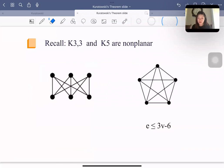Recall that K3,3 and K5 are non-planar, and we can prove these two graphs are not planar by using Euler's formula.